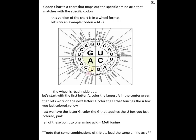Now this one is the wheel version. Wheel, circle, whatever. It's a round shape, that's the whole point. So again, on the top of the page you should write codon chart, a chart that maps out the specific amino acid that matches with the specific codon.